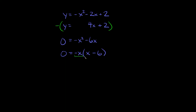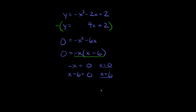We can factor out a negative x from each term, so we get 0 equals negative x times (x minus 6). We have two factors: negative x and (x minus 6). So we set each equal to 0. Negative x equals 0 gives us x equals 0, and x minus 6 equals 0 gives us x equals positive 6. So we get two answers: x equals 0 and x equals 6.